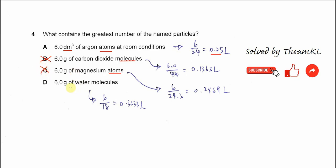So for water, 6 grams. Because it's grams, we need to use the molar mass. 6 over 18. So we get 0.3333L. So this one is the largest number of particles. Answer is D.